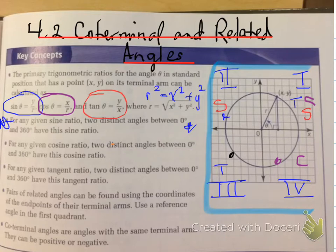What we've determined is the CAST rule. Cosine is positive in the fourth quadrant, tangent is positive in the third quadrant, sine is positive in the second quadrant, and in the first quadrant, all three are positive. This is the CAST rule, starting with A in quadrant one.